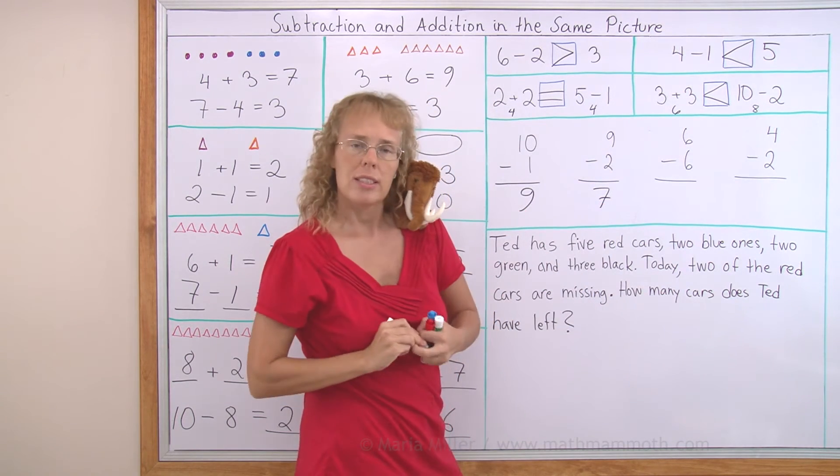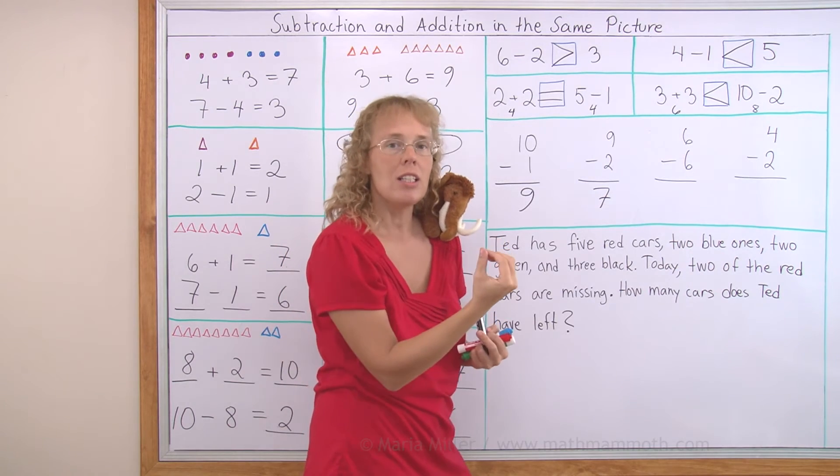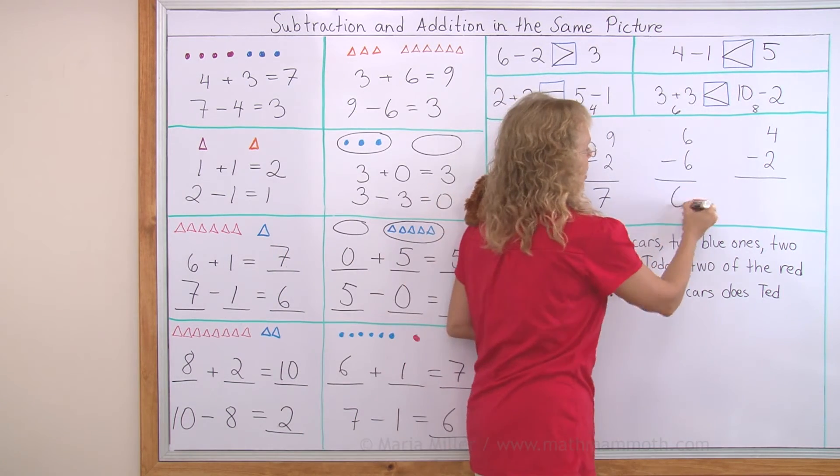6 - 6. Imagine six cars. And six of them go away. Zero are left.